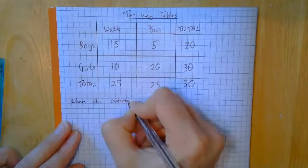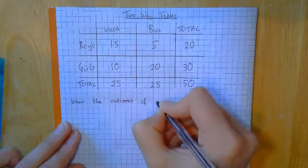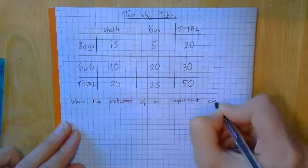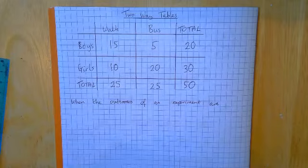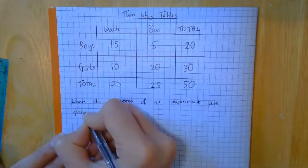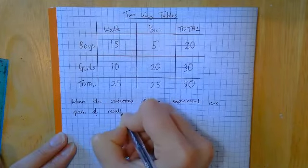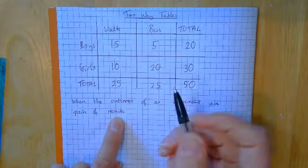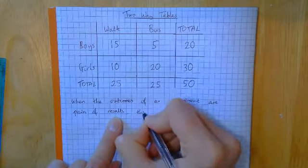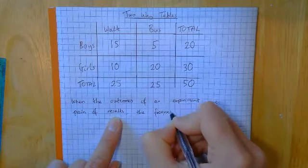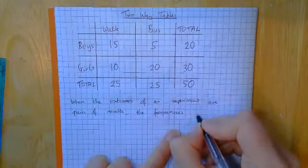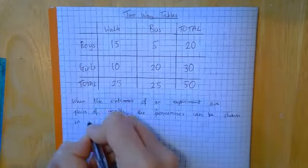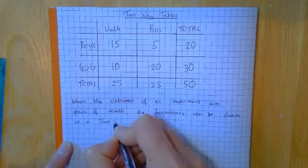When the outcome or the outcomes of an experiment are pairs of results, like boy walk or girl bus. So when the outcomes of an experiment are pairs of results, the frequencies, that's a nice maths word, just means how many, the frequencies can be shown in a two-way table.